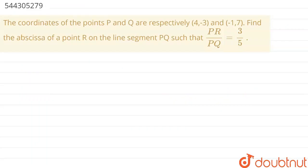Hello students, welcome to Doubtnet. Let's see the question. The coordinates of the points P and Q are respectively (4, -3) and (-1, 7). Find the abscissa of a point R on the line segment PQ such that PR upon PQ is equal to 3 upon 5.